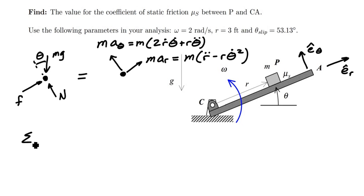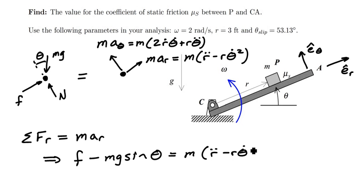So I'm going to start this problem. I'm going to go ahead and sum forces in the radial direction. And if I do that, I'll set this equal to m times a sub r. And this is going to give me that f minus mg times the sine of the angle theta is equal to m times quantity r double dot minus r times theta dot squared. And let's call that equation 1.